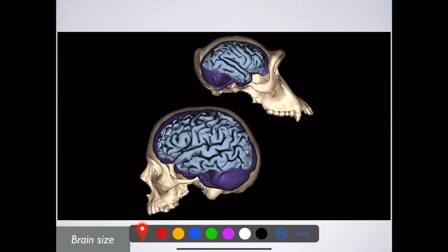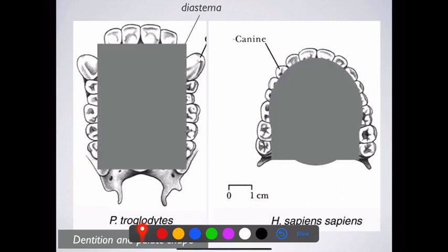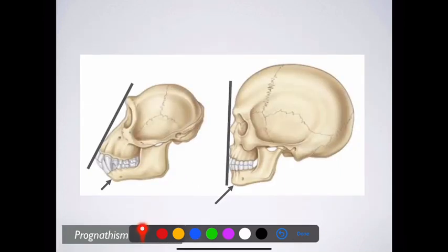Looking again at brain volume — our brain volume is much larger. When we talk about the jaw and palate shapes, we refer to C-shape versus U-shape. Here you can see the C-shape of our jaw and the U-shape of the chimpanzee's jaw — Pan troglodytes. Notice the spacing between the teeth: that's your diastema, the space where the canine from the upper jaw slots into the lower jaw without cutting the individual. Then there's the flat face versus the sloping face, the non-prognathous jaw versus the prognathous jaw.